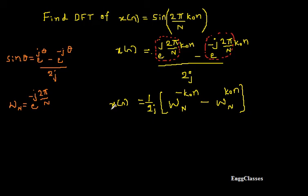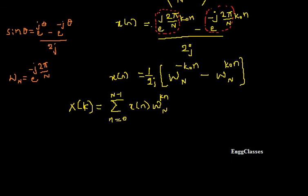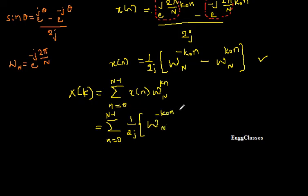This is now in reduced form and I can use it to find the DFT x(k). The DFT of x(n) is represented as x(k), and the formula states: x(k) = summation from n=0 to N−1 of x(n) · W_N^(k·n). Substituting, I have (1/2j) · [W_N^(−k₀n) − W_N^(k₀n)] multiplied by W_N^(k·n).